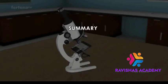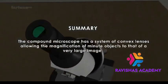Summary. The compound microscope has a system of convex lenses, allowing the magnification of minute objects to that of a very large image.